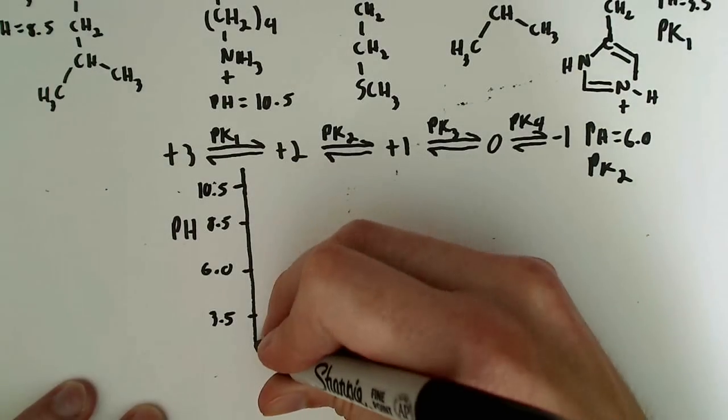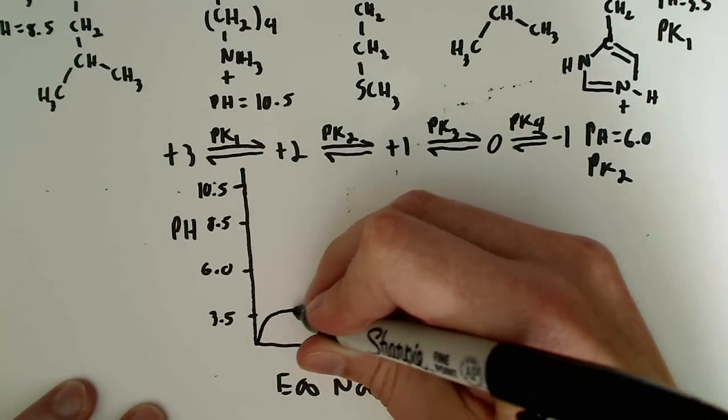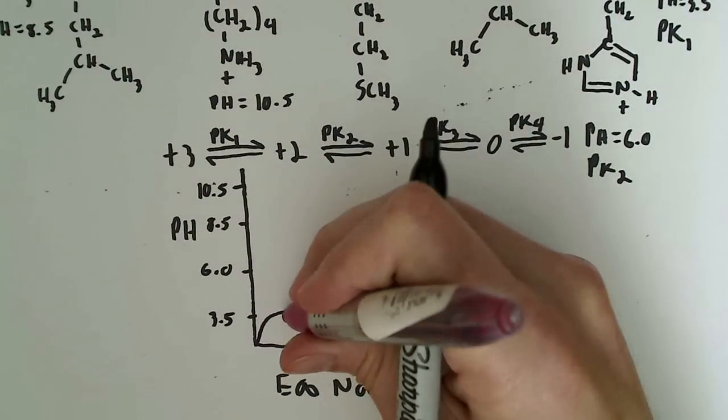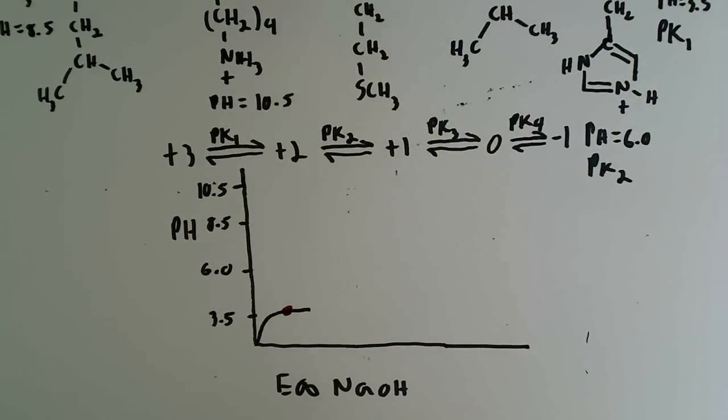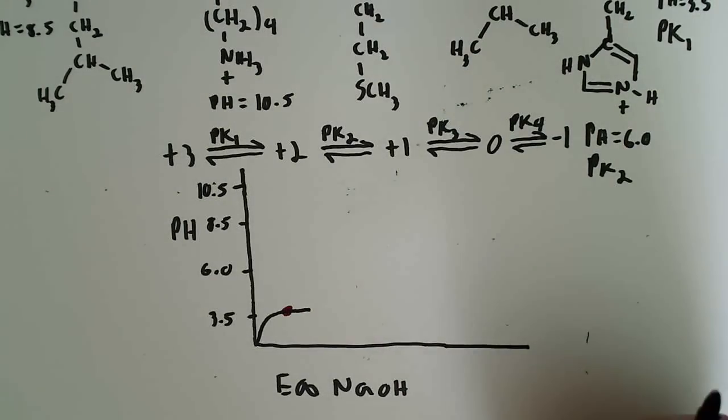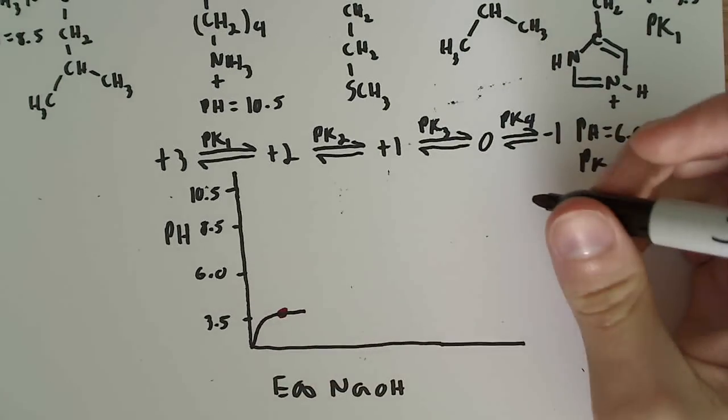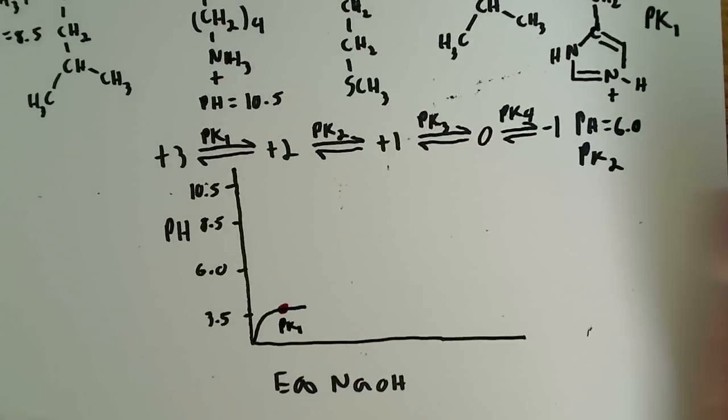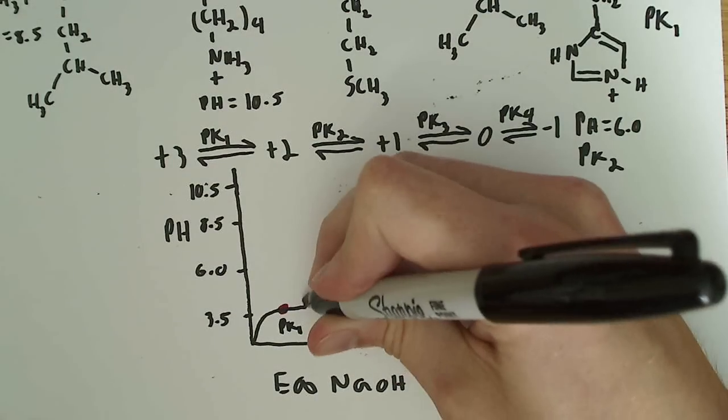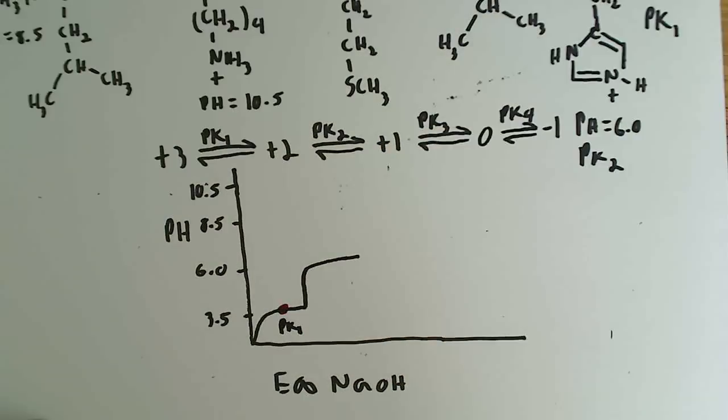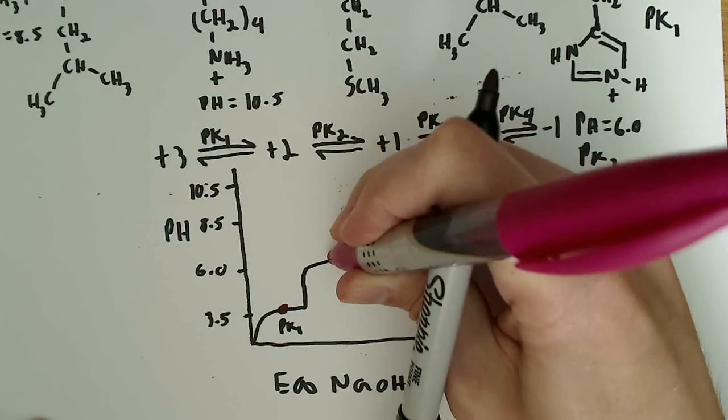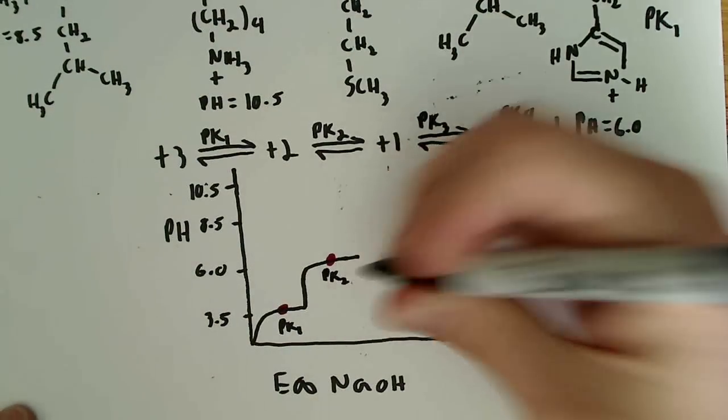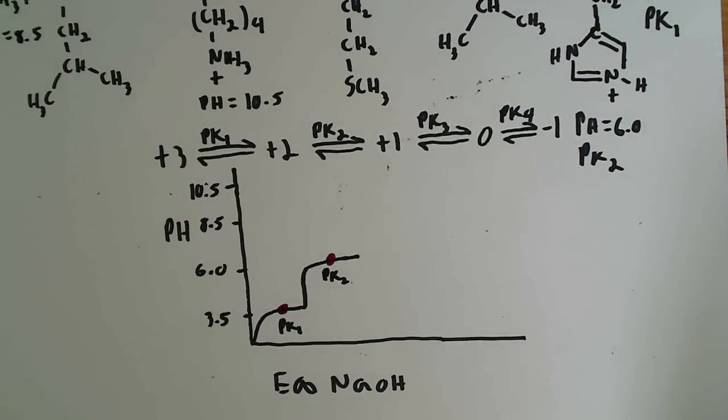So I'm going to start drawing my curve, and it's going to flatten out at 3.5. So I've got a different color marker here to mark the point there, which is pK1, and that corresponds to the carboxyl group. So that's pK1, and we continue up to 6, flatten out around 6, mark that spot there, and that's pK2, and that corresponds to the histidine proton.